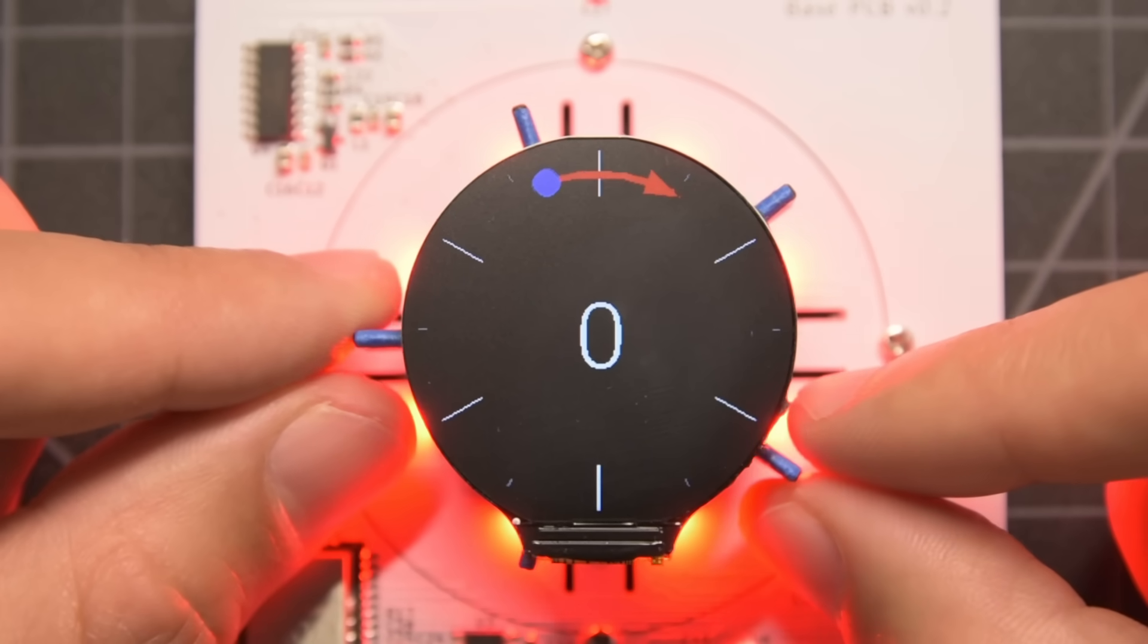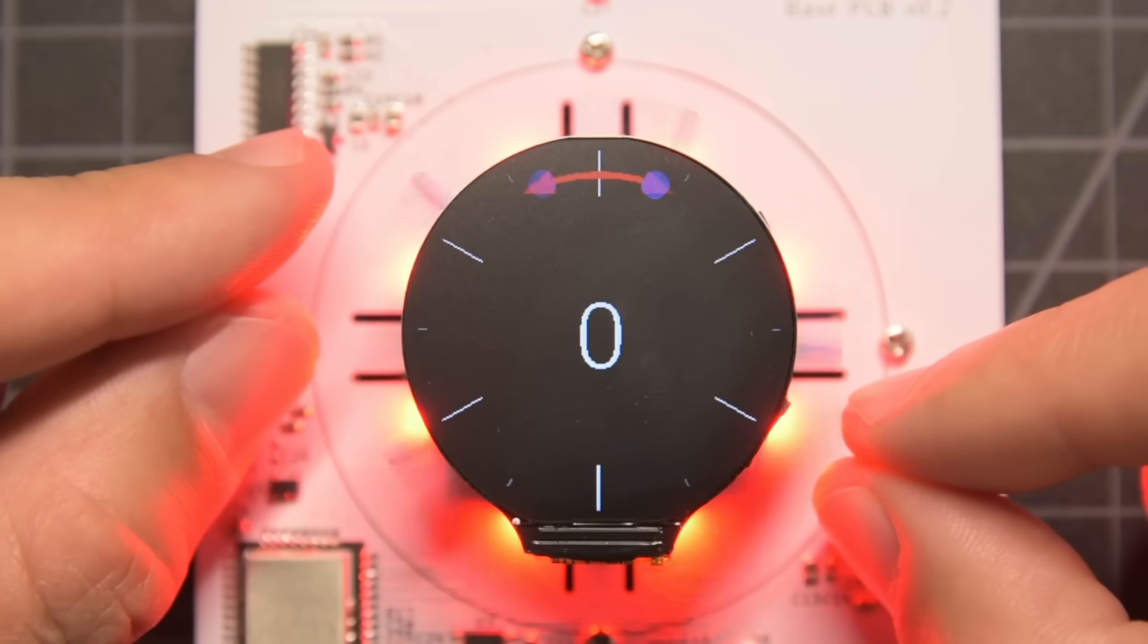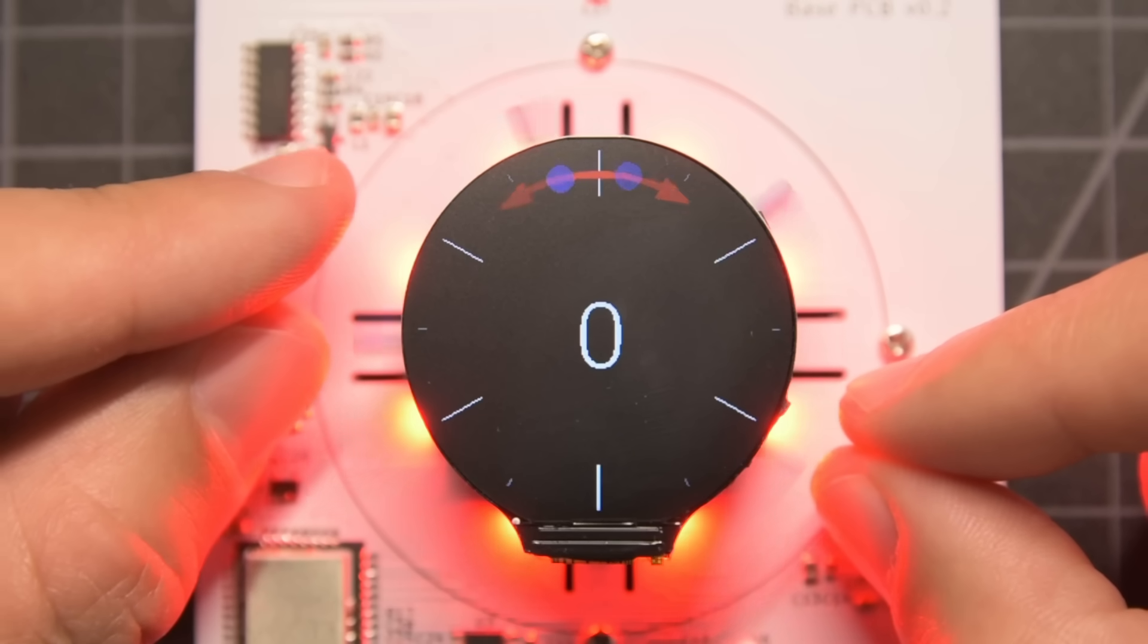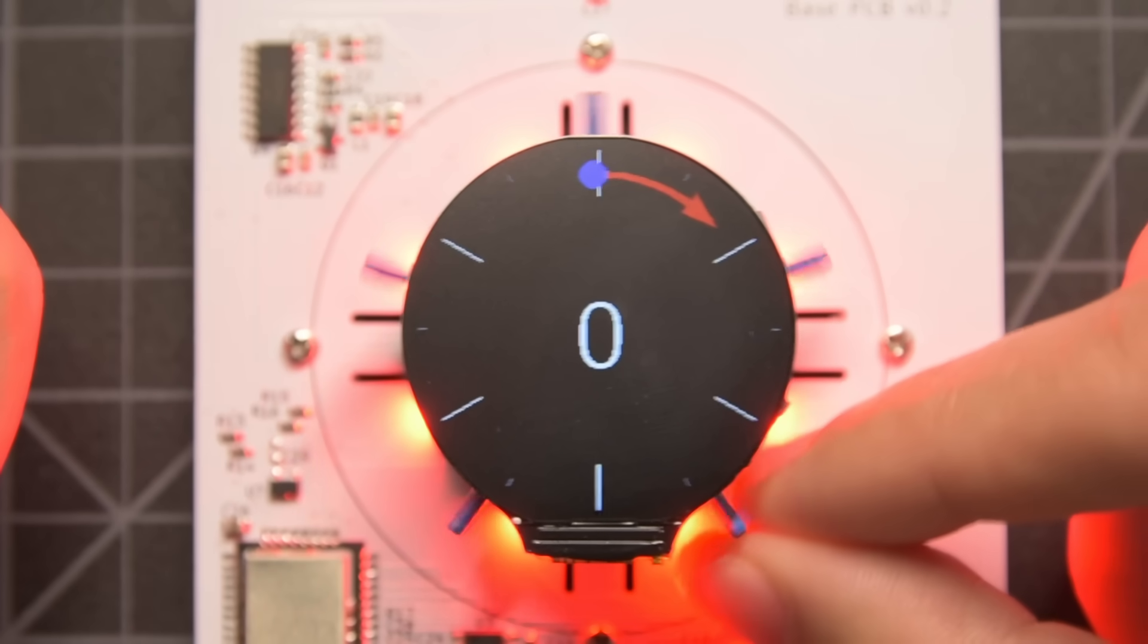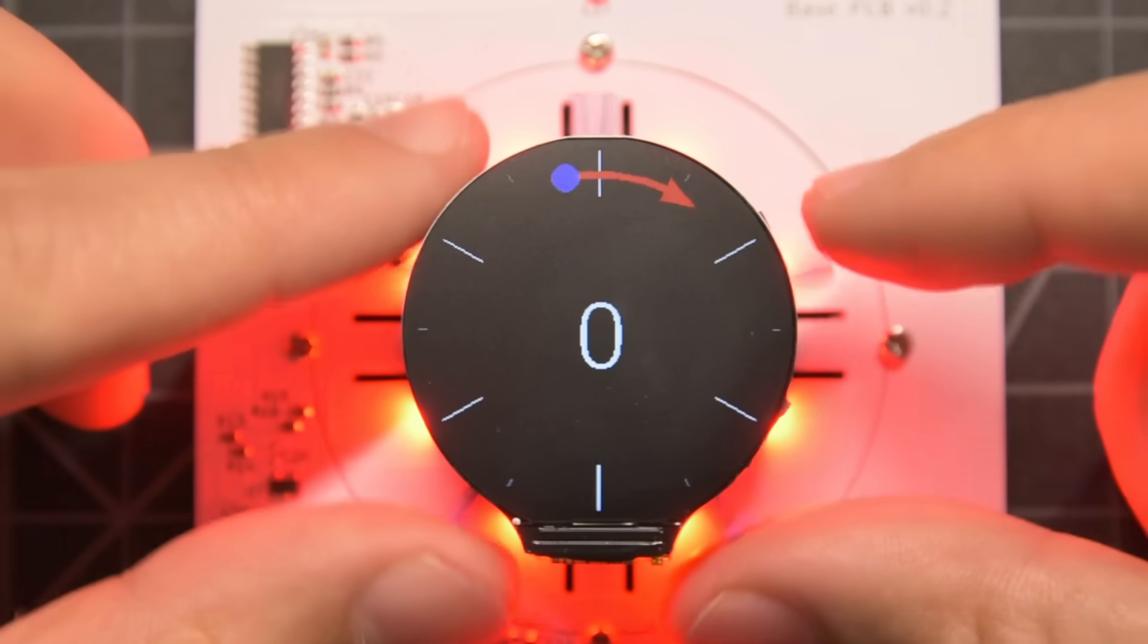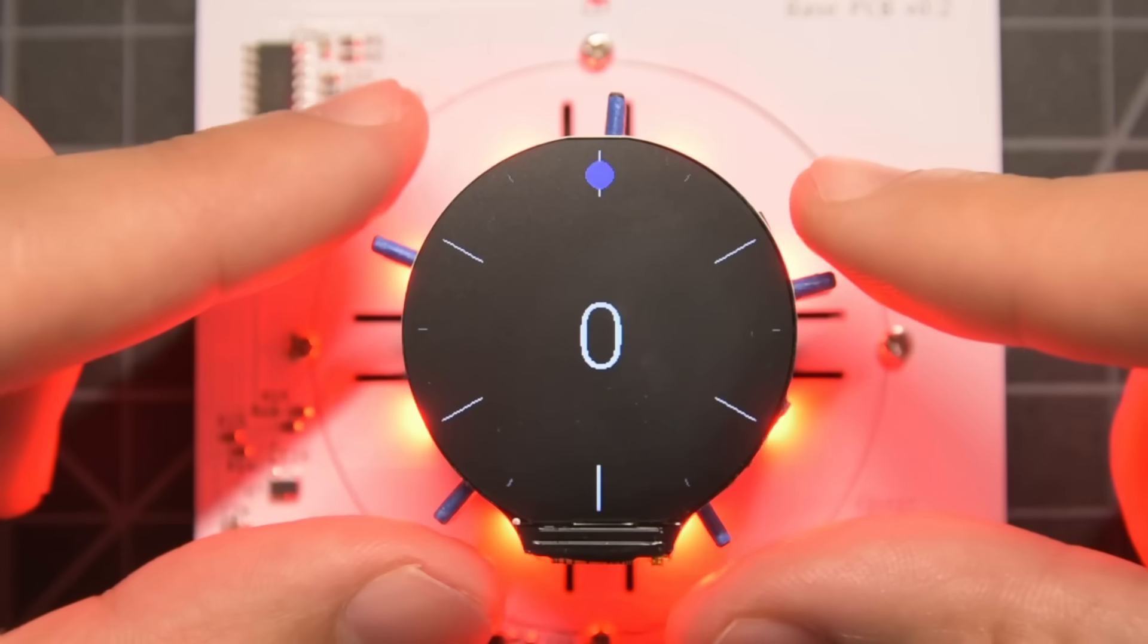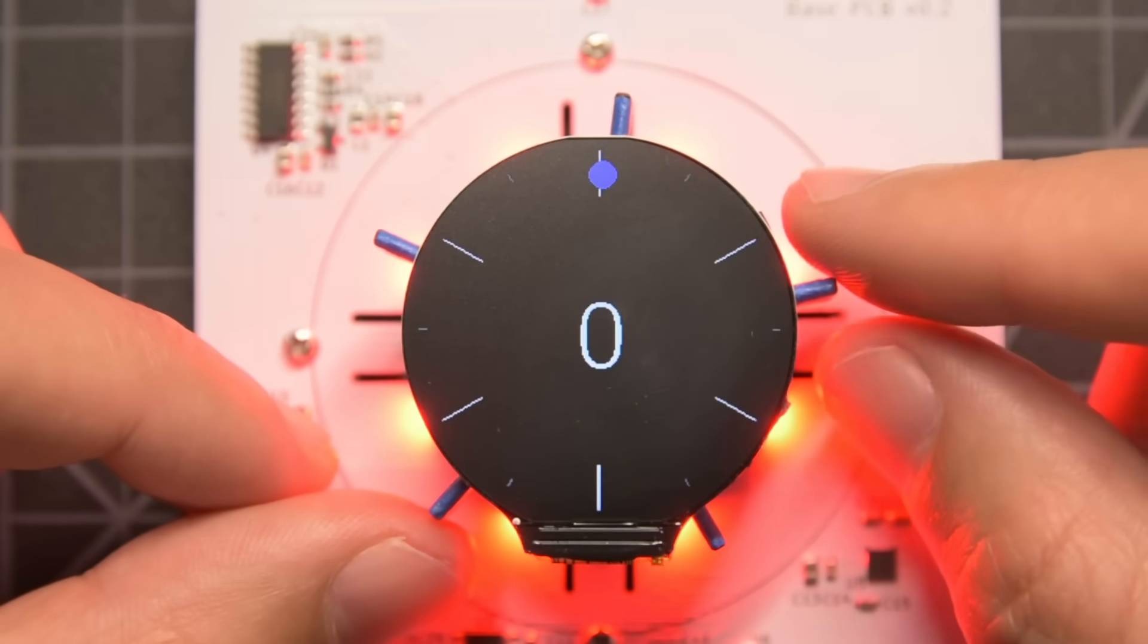However, there's one problem. Since we're always applying torque in one direction or another, it never settles down even when it's reached the center of the virtual detent.